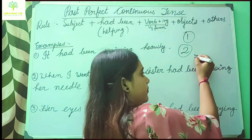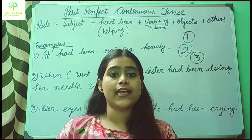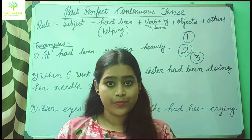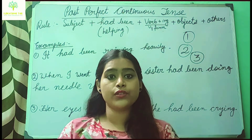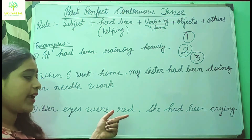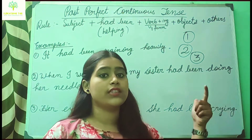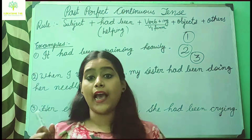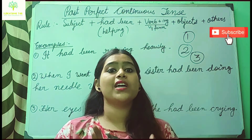Third, past perfect continuous tense is used to draw a conclusion. For example, 'Her eyes were red — she had been crying.' The conclusion is that she had been crying because her eyes were red.